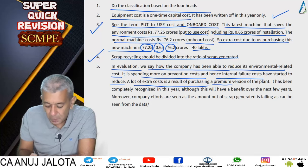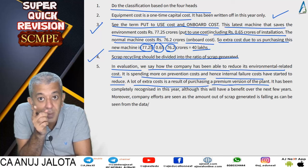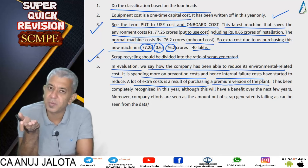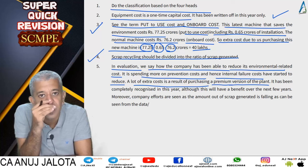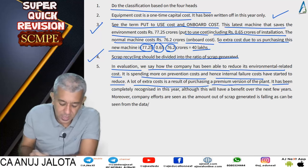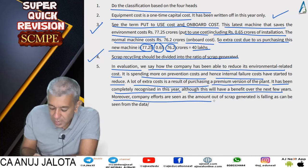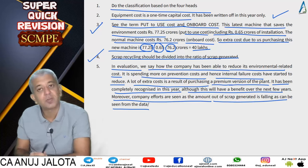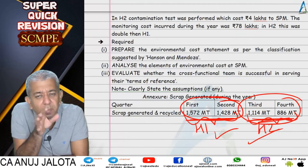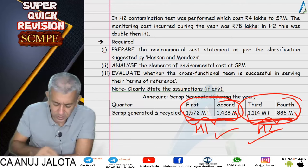In the evaluation, we say: how the company has been able to reduce environmental-related costs; it is spending more on prevention cost and hence internal failure cost has started to reduce. A lot of extra cost is a result of purchasing the premium version of the plant - technically this capital cost should not come in this year alone, but since no life was given, the entire cost was recognized this year. Future reports will look better. Company's efforts are seen as the amount of scrap is falling. Internal failure costs are still very high but progress is happening gradually.